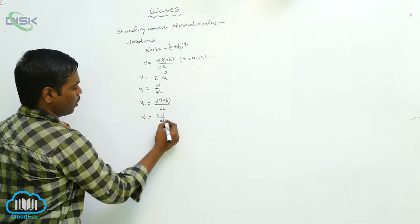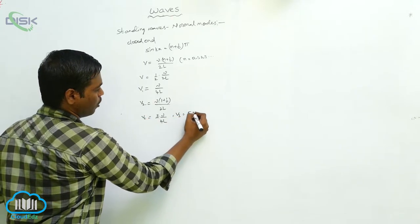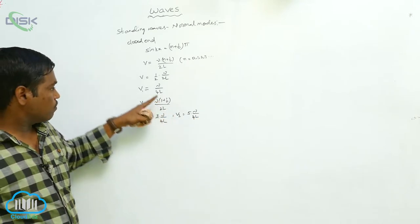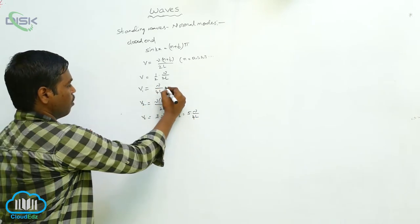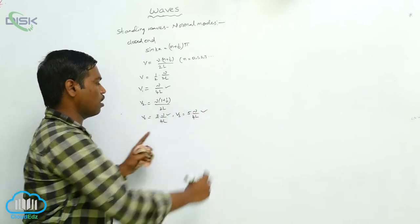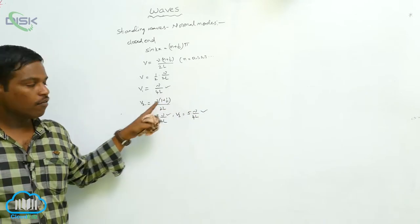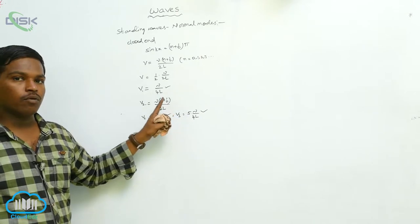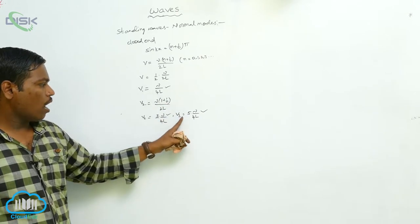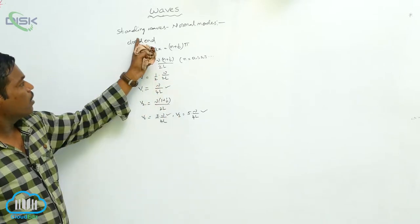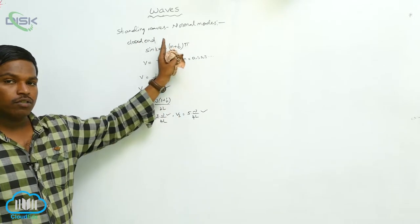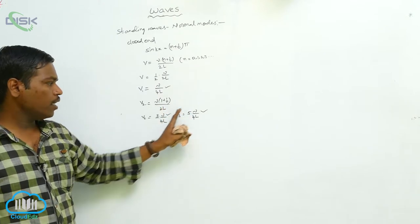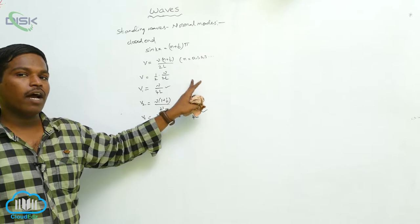V₂ equals 3·nu/4L. If we write V₃, we get 5·nu/4L. The first harmonic, second harmonic, and third harmonic are like this. If you observe, we get only the odd multiples of the normal modes. For the closed end, only odd multiples are obtained and the remaining modes vanish.